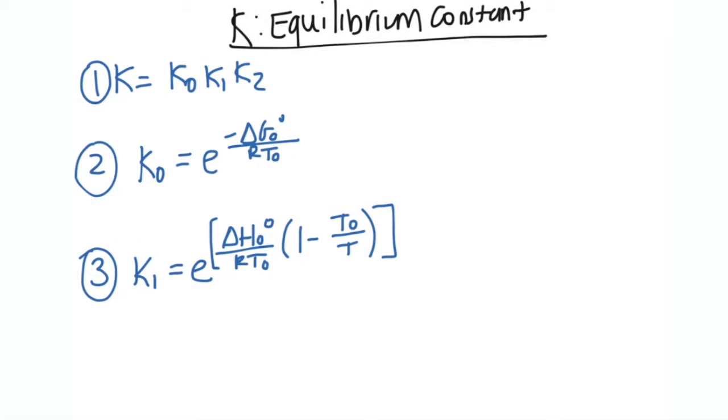To start, there's going to be four main equations you're going to see that have to do with the equilibrium constant or that are going to be used to calculate the equilibrium constant. Here are the four main ones that you'll see.